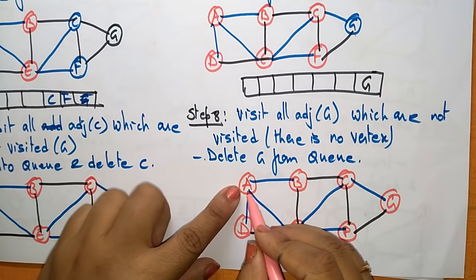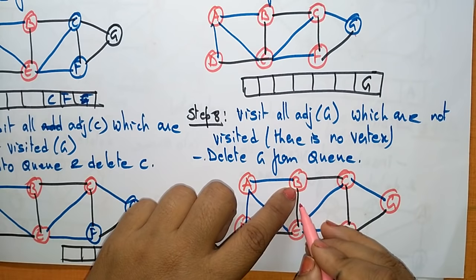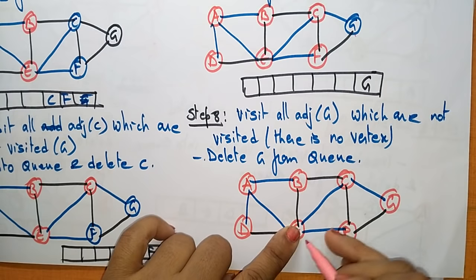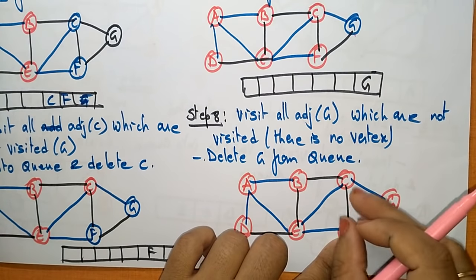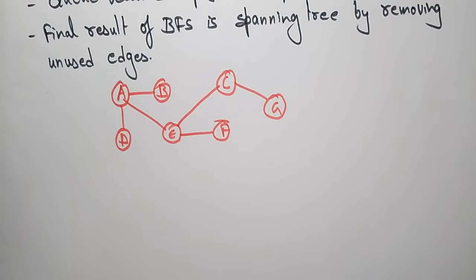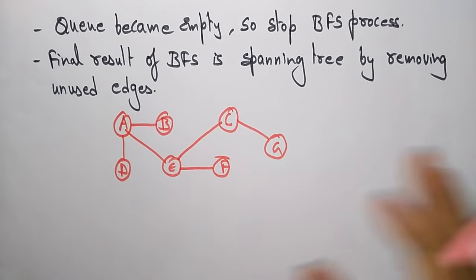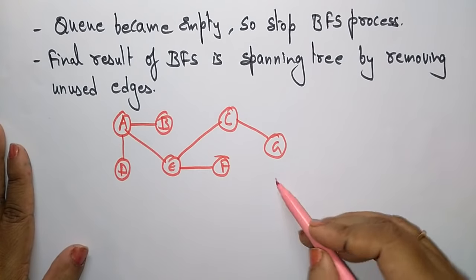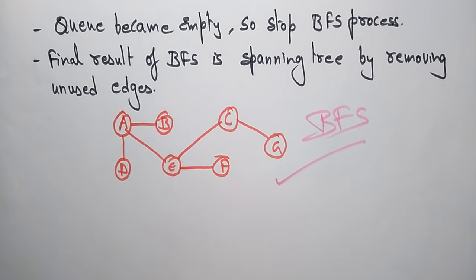The traversal path selected was: from A to D, then B, then from E visiting C and F, and from C visiting G. The queue is now empty, so the BFS process stops. The final result of BFS is a spanning tree produced by removing the unused edges from the graph.